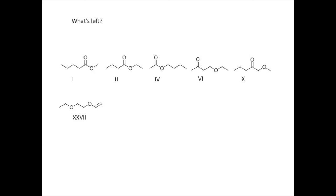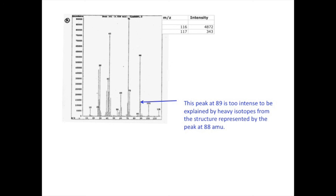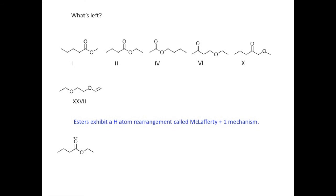Note that there's a significant peak at 89. It is true that whatever fragment appears at 88 might be expected to have a heavy isotope version giving rise to some signal at 89. However, this is much too tall to be explained easily that way. The loss of 27 from our molecular formula can only be explained by the loss of a neutral fragment with composition of C2H3. Several of the remaining candidates are esters. That functional group is prone to a hydrogen rearrangement mechanism known as a McClafferty plus one mechanism. The process starts out in the same way as a McClafferty rearrangement. A hydrogen atom is transferred followed by a pair of electrons moving out of the double bond to the oxygen atom.